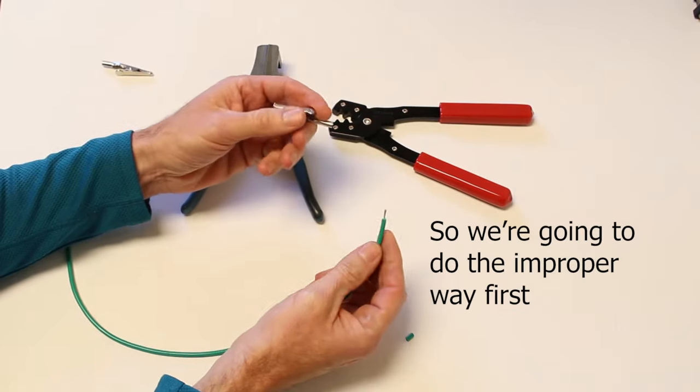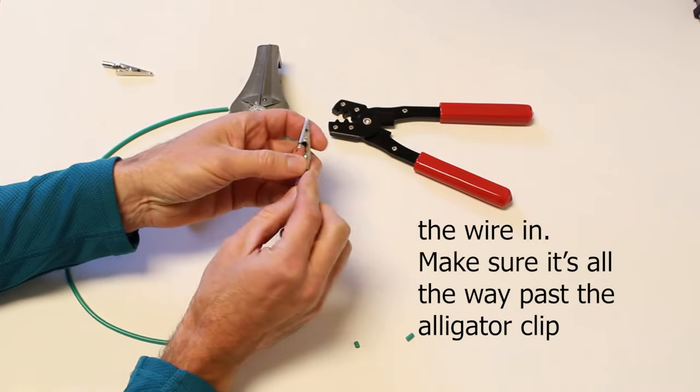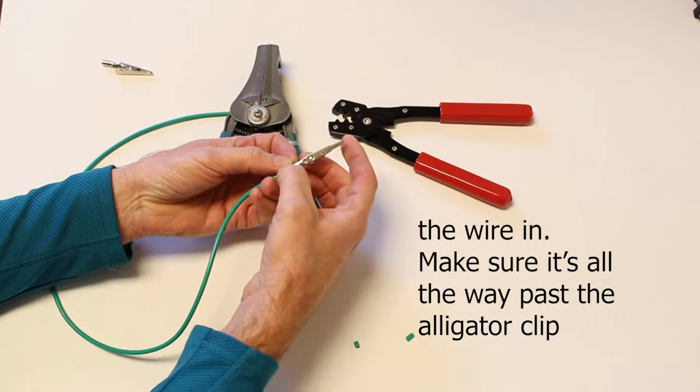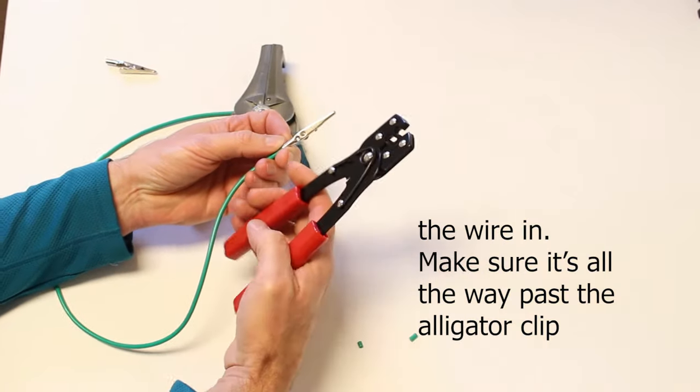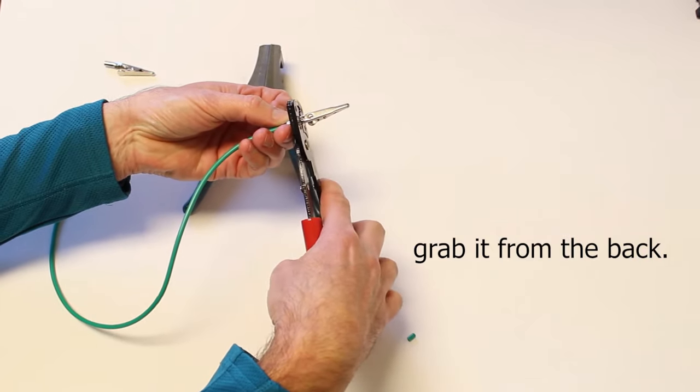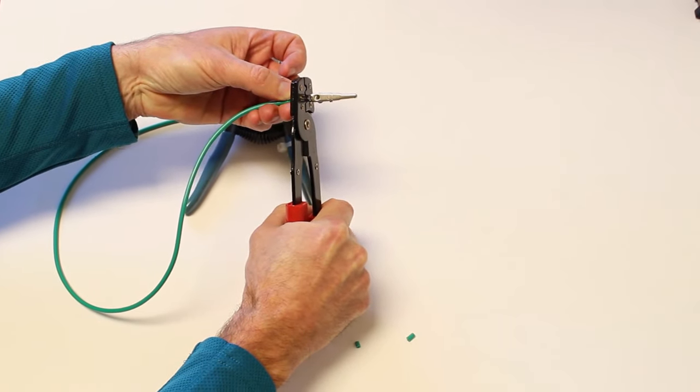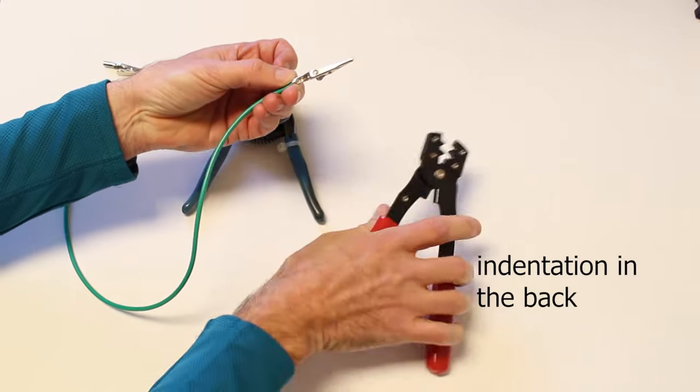So we're going to do the improper way first, which we're going to insert the wire in, make sure it's all the way past the alligator clip, and grab it from the back, crimp, squeeze hard. You'll see there's a nice indentation in the back.